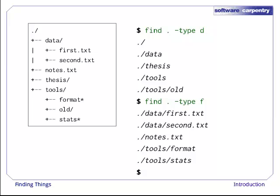If we change -type d to -type f, we get a listing of all the files instead. Find automatically goes into subdirectories, their subdirectories, and so on to find everything that matches the pattern we've given it.